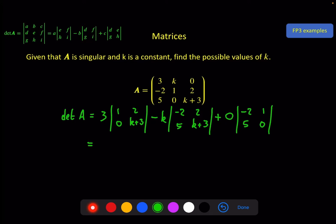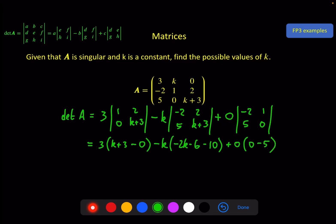Applying the 2x2 determinants: 1 times (k+3) is k+3, minus 2 times 0; then minus 2 times (k+3) is minus 2k minus 6, minus 2 times 5 which is 10; plus 0 times (minus 2 times 0 minus 1 times 5) — which of course is going to be 0, so I wouldn't normally write that last one.